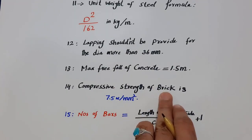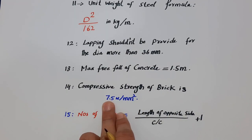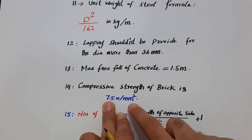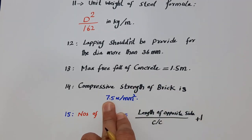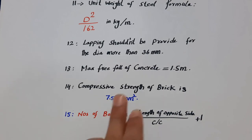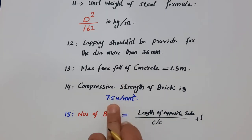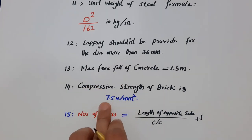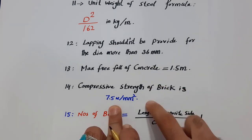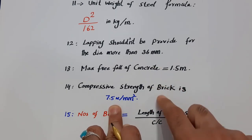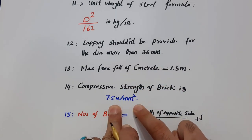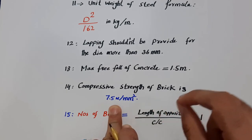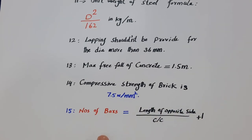The fourteenth one is compressive strength of brick. The compressive strength of brick should not be less than 7.5 Newton per mm square. It doesn't have to be exactly 7.5, but it must not fall below this value.